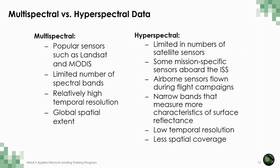Much of the data currently available to the public is multispectral — sensors like Landsat with a limited number of bands, usually with relatively high resolution and global coverage. Hyperspectral data, on the other hand, has the advantage of increased spectral resolution. However, hyperspectral data sources are currently limited. A number of hyperspectral missions are ongoing and planned, but these data are not yet freely available over the same spatial scale as multispectral data, which we will discuss in more detail later in the lecture.